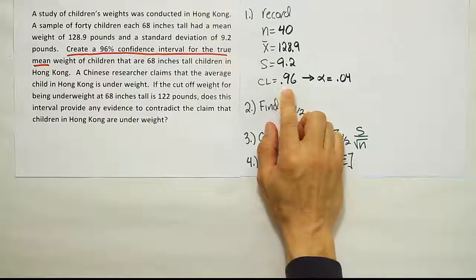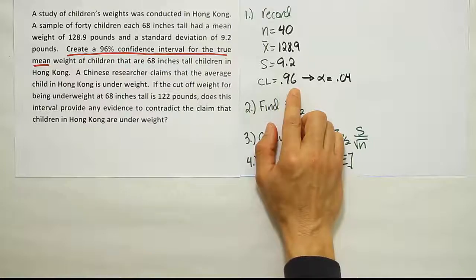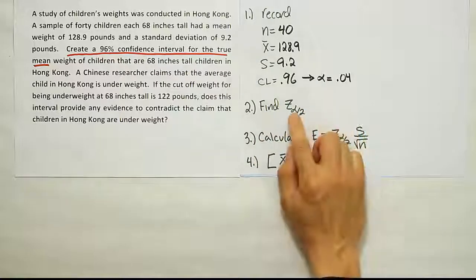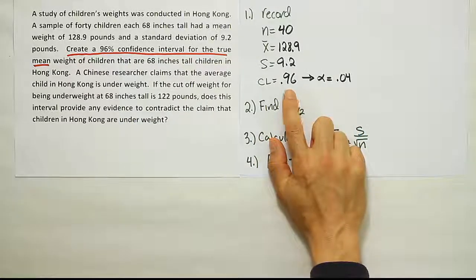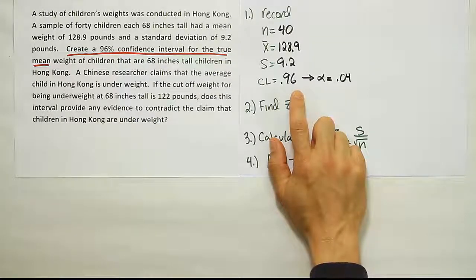Now, in this instance, this is a confidence level that we could not find on the t-table. You know, the classic values we can find on the t-table are 90, 95, 98, and 99. 96 isn't one of them, so we have to use the old-fashioned z-table to do this problem. When we're doing a z-table problem, what we really want to do is to take the confidence level and divide it in half and look that up on the z-table.